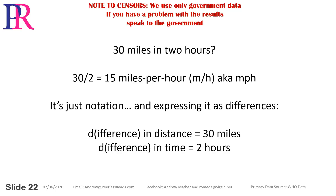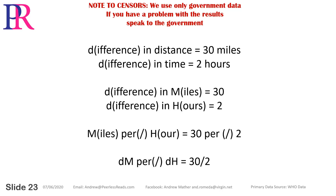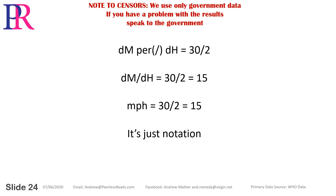D, difference in distance, equals 30 miles. D, difference in time, equals 2 hours. We can rewrite as: D miles equals 30, D hours equals 2. So miles per hour equals 30 divided by 2. DM per DH equals 30 over 2. DM per DH equals 30 over 2 equals 15. MPH equals 30 over 2 equals 15. It's just notation.